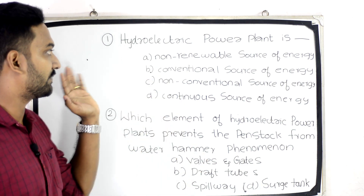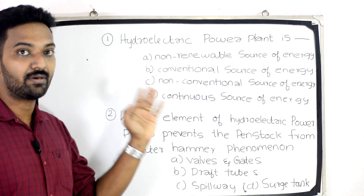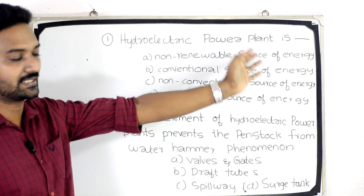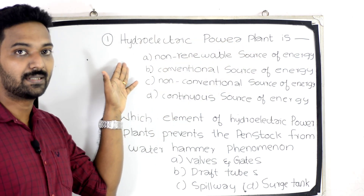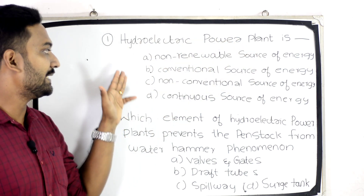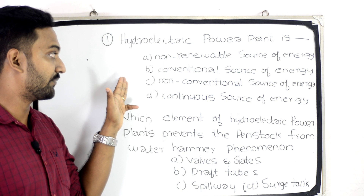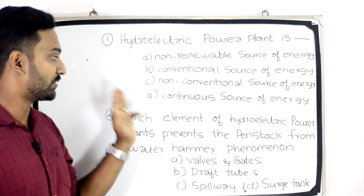First question. Hydroelectric Power Plant is — Option A: Non-renewable Source of Energy. Option B: Conventional Source of Energy. Option C: Non-conventional Source of Energy.